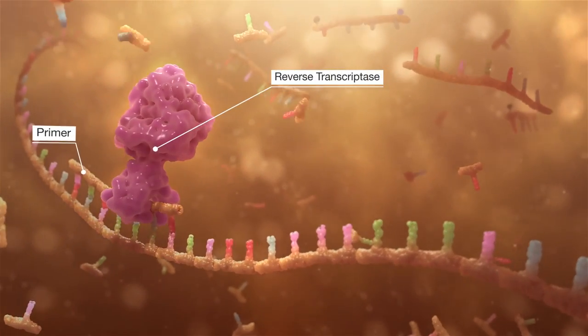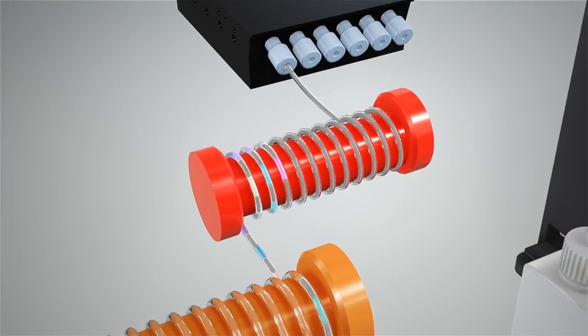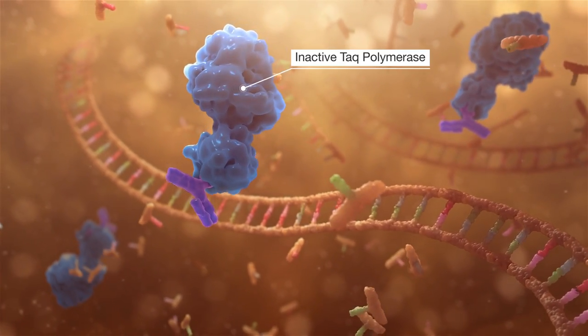The train is then delivered through a 55 degree Celsius zone for reverse transcription and then through a 94 degree Celsius zone for activation of TAC polymerase.